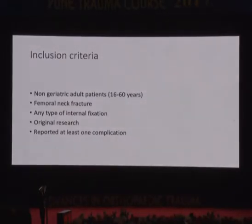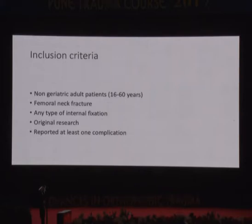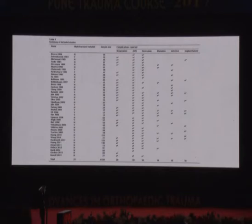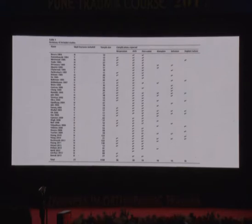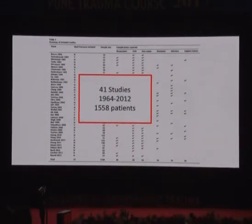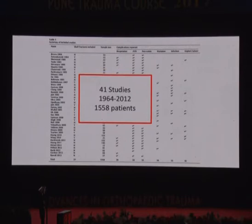In this systematic review, they looked at young patients with femoral neck fractures to ascertain the overall incidence of nonunion and AVN. We commonly hear it's up to 35% or 10%, but we don't know what the totality of the literature says. What they found was about 41 studies from 1964 to 2012, looking at about 1,500 patients. So you have to ask yourself: does what we know about femoral neck fractures derive from only 1,500 patients and our own practices?